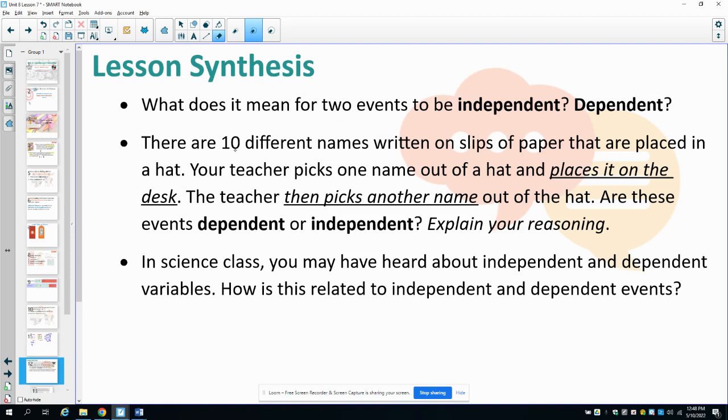So in this situation, there are 10 different names written on slips of paper that are placed in a hat. Your teacher picks out one name from the hat, places it on the desk. Then the teacher picks another name out of the hat. Are these events dependent or independent? And because your teacher doesn't replace the name, those events are dependent because there's 10 names in the bag the first choice. And then in the second choice, there's only nine names left. So that's going to directly impact that probability of the second choice. If your teacher were to replace the name, then it would be independent events. But the fact that they kept it on their desk means that it's dependent.